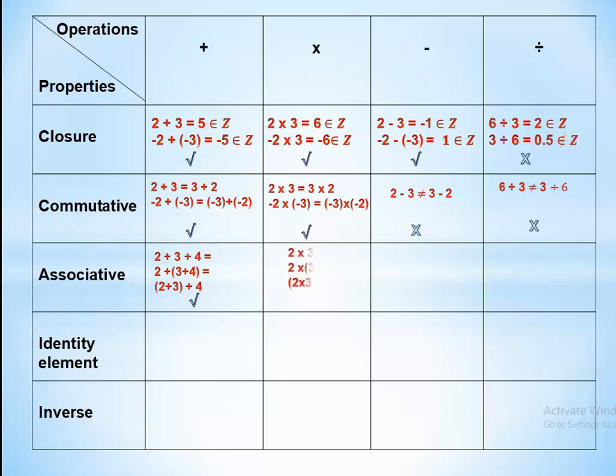For multiplication: 2 times 3 times 4 equals 24. Grouping as 2 times (3 times 4) gives 2 times 12 equals 24, and (2 times 3) times 4 gives 6 times 4 equals 24 — same answer. So associative exists in multiplication. Associative does not exist in division or subtraction.